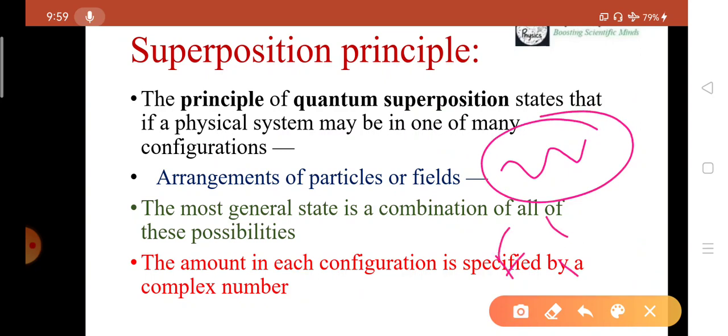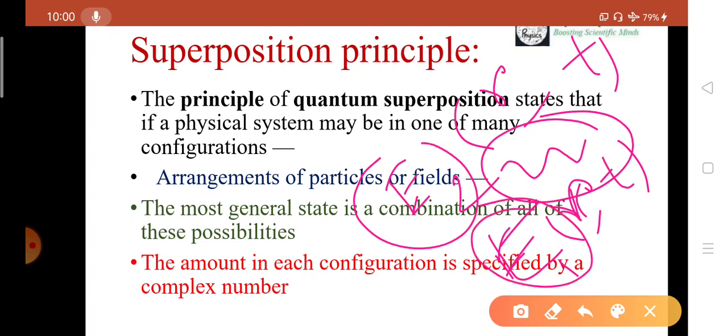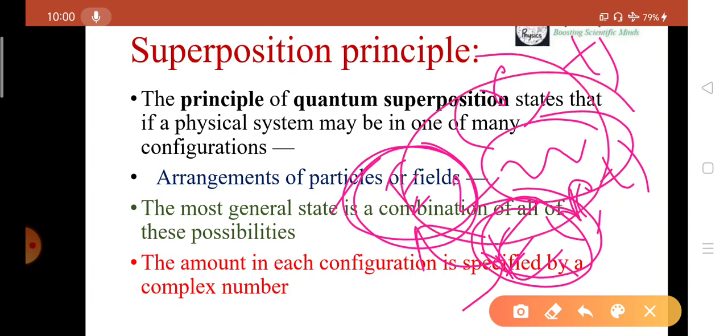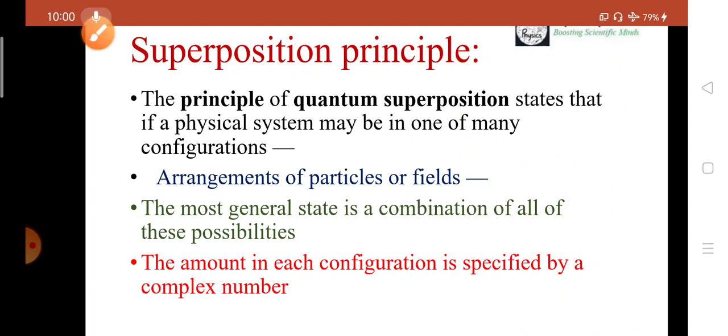then the superposition of those waves, if E1 is one vector for electric field along R,T at position R and time T, and E2 is another solution involving R and T, then E1 plus E2 will also satisfy Maxwell's equation provided E1 and E2 alone each satisfy Maxwell equation. The combination or superposition will also be a solution, and the amount of each configuration is specified by a complex number.